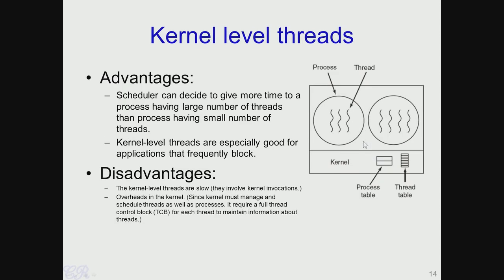Now let us look at kernel-level threads. The process which runs in user space could have multiple threads, with each thread being a separate independent execution unit, and the management of these thread resources is done in the kernel space. Along with the process control block shown here as a process table, the kernel also maintains a thread control block in the kernel space. This is unlike user-level threads where the thread table is maintained in user space. Here the TCB is maintained in kernel space, and therefore the kernel is aware of the number of threads a process executes and could make decisions based on this fact.